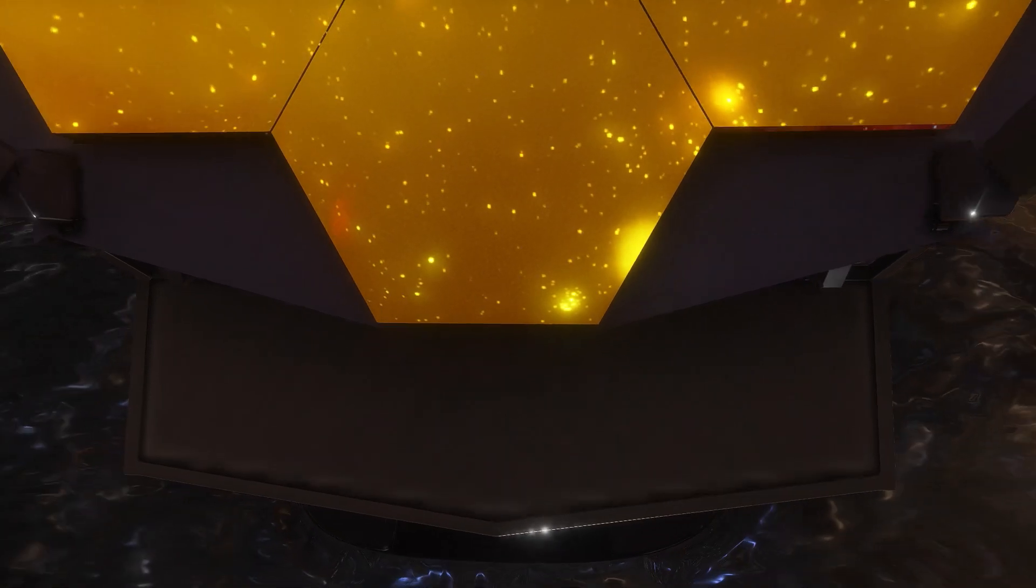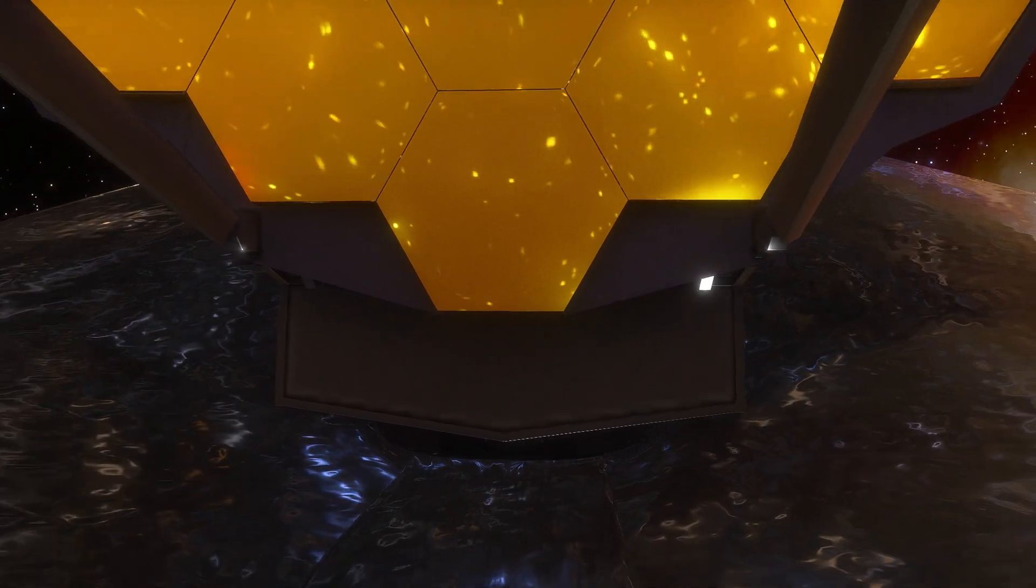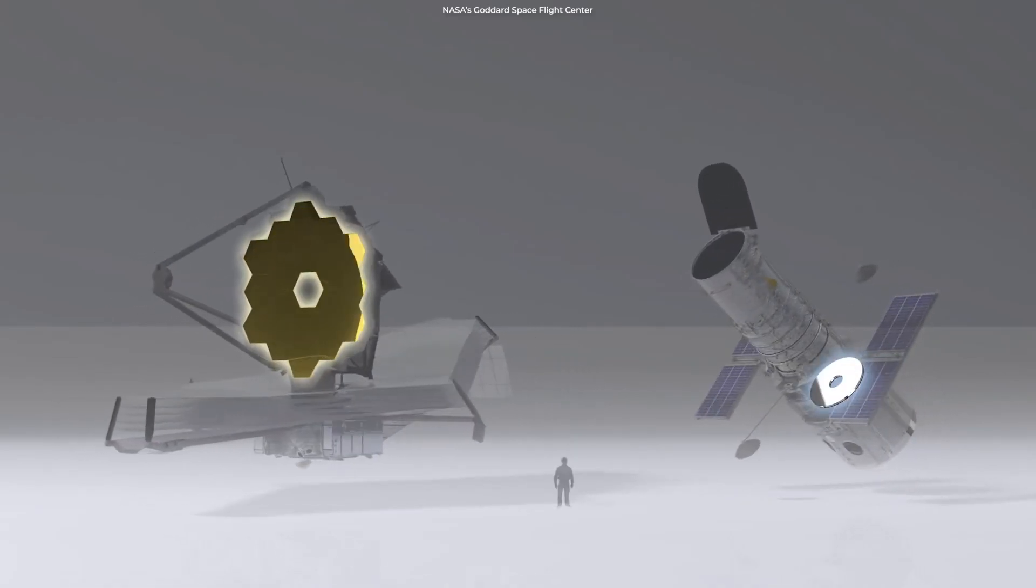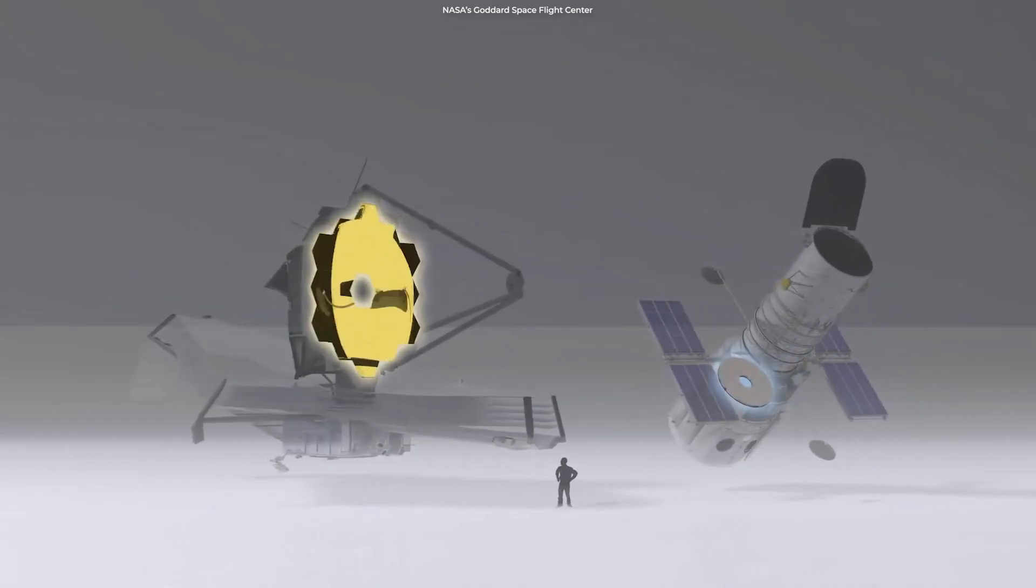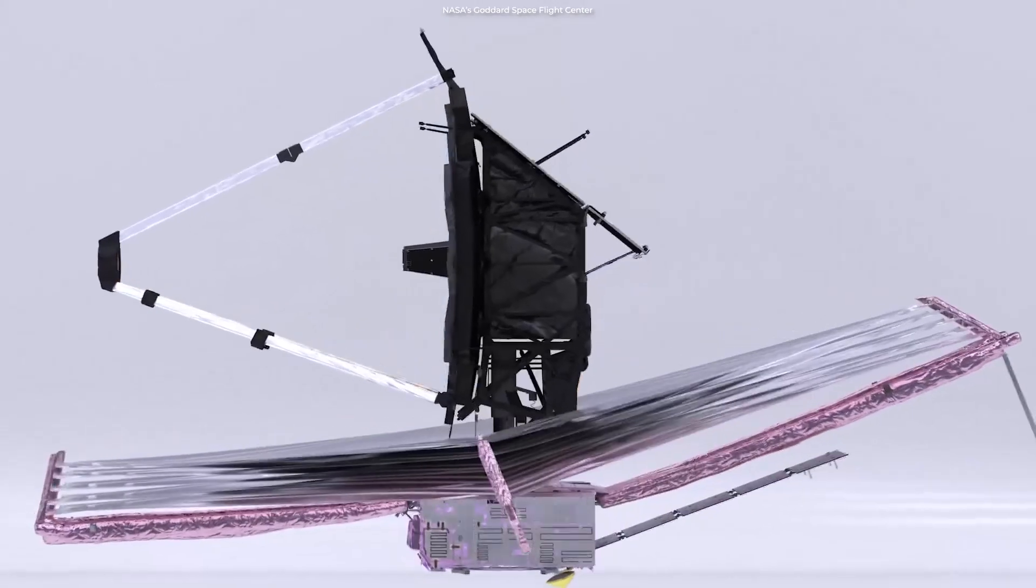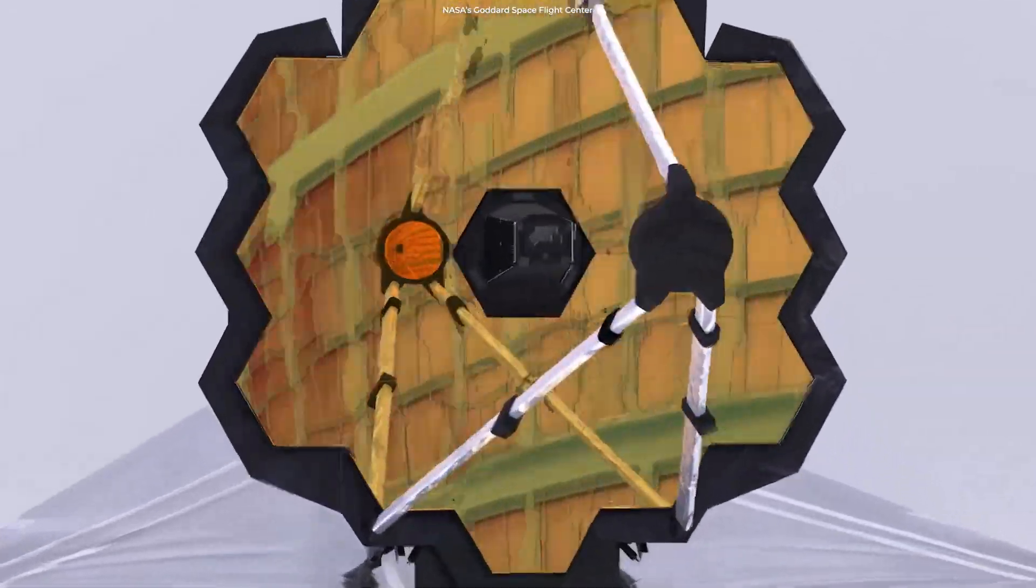Engineers optimized James Webb for specifically detecting the faint infrared light of the earliest stars or galaxies. Compared to the Hubble Space Telescope, James Webb has a 15 times wider field of view on its camera, collects six times more light, and its sensors are tuned to be most sensitive to infrared light.